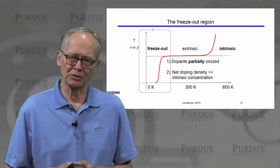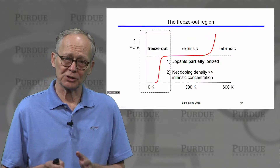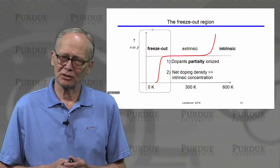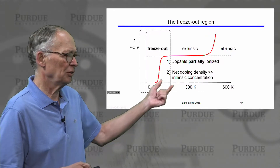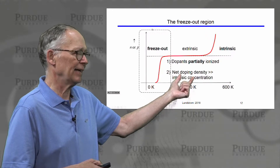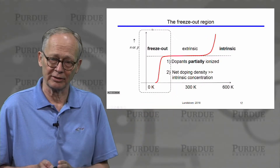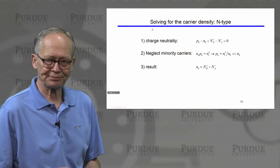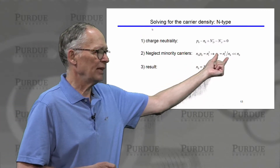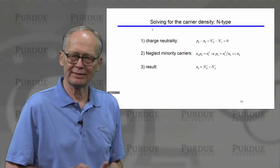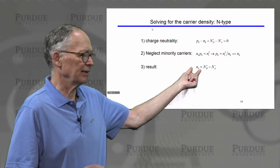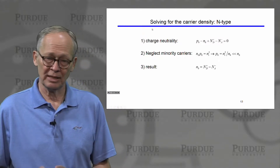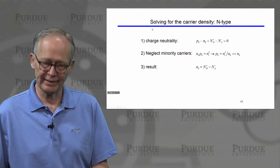Let's shift attention to the low-temperature freeze-out region. At low temperatures, there is not enough thermal energy to completely ionize the dopants — they are only partially ionized. There is also not enough thermal energy to create intrinsic carriers, so the net ionized doping density can still be much greater than the intrinsic carrier concentration. We begin with space charge neutrality, but since ni² is so small we can neglect the minority carriers. The electron concentration equals the net n-type ionized doping concentration — all we need is to compute the fraction of dopants that are ionized.